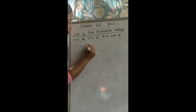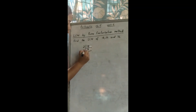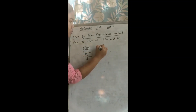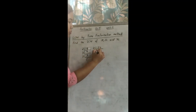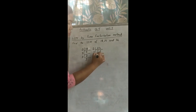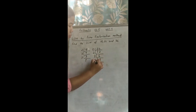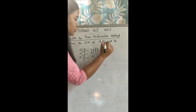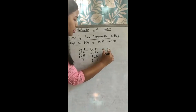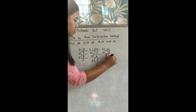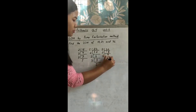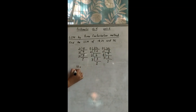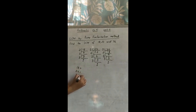Now let us find the prime factors. For 18: 2 × 9, then 3 × 3, giving 1. For 24: 24 ÷ 2 = 12, 12 ÷ 2 = 6, 6 ÷ 2 = 3, and 3 ÷ 3 = 1. For 36: 36 ÷ 2 = 18, 18 ÷ 2 = 9, 9 ÷ 3 = 3, and 3 ÷ 3 = 1. Now you write all the factors of 18, 24, and 36.